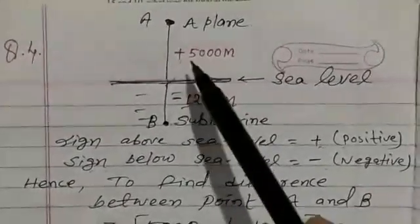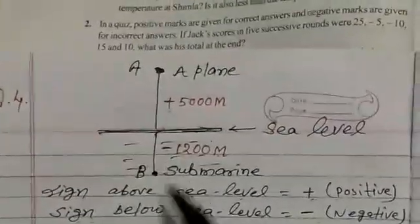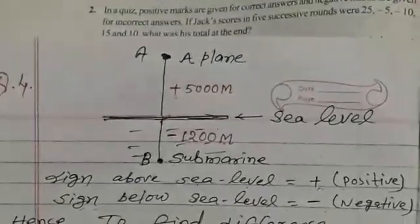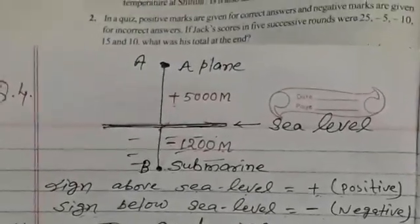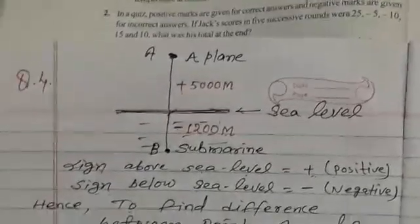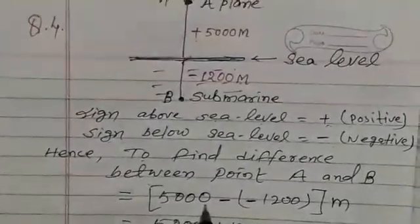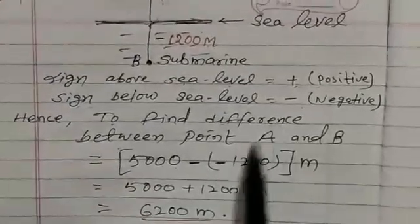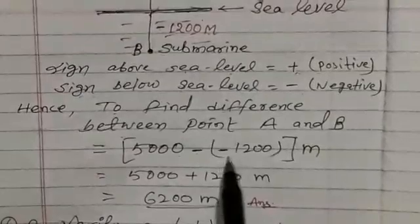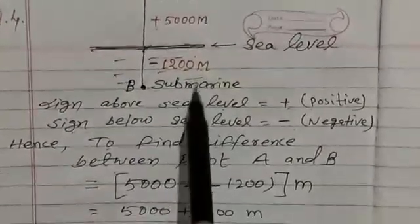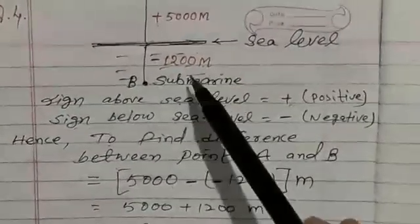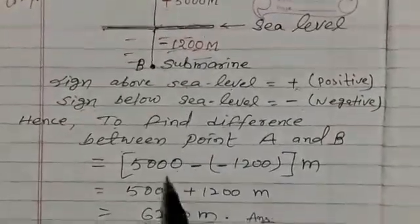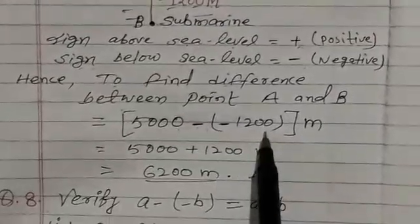Now, to find the distance between them, to find difference between point A and B, you write 5,000 minus. This minus comes from to find difference and minus 1,200 meters is the distance of submarine from sea level. So you write here, 5,000 minus, minus 1,200 meters.